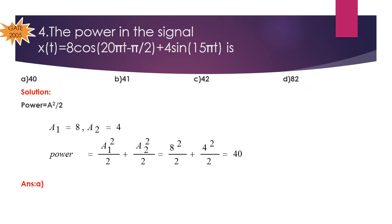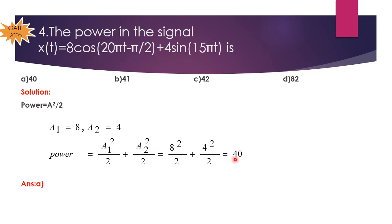Problem 4: Find the power in the signal x(t) = 8 cos(2πt − π/2) + 4 sin(15πt). No need to use the full power formula — we can directly use power = A²/2. For the first term, A₁ = 8; for the second term, A₂ = 4. Total power = A₁²/2 + A₂²/2 = 64/2 + 16/2 = 32 + 8 = 40 watts. Option A is the correct answer.